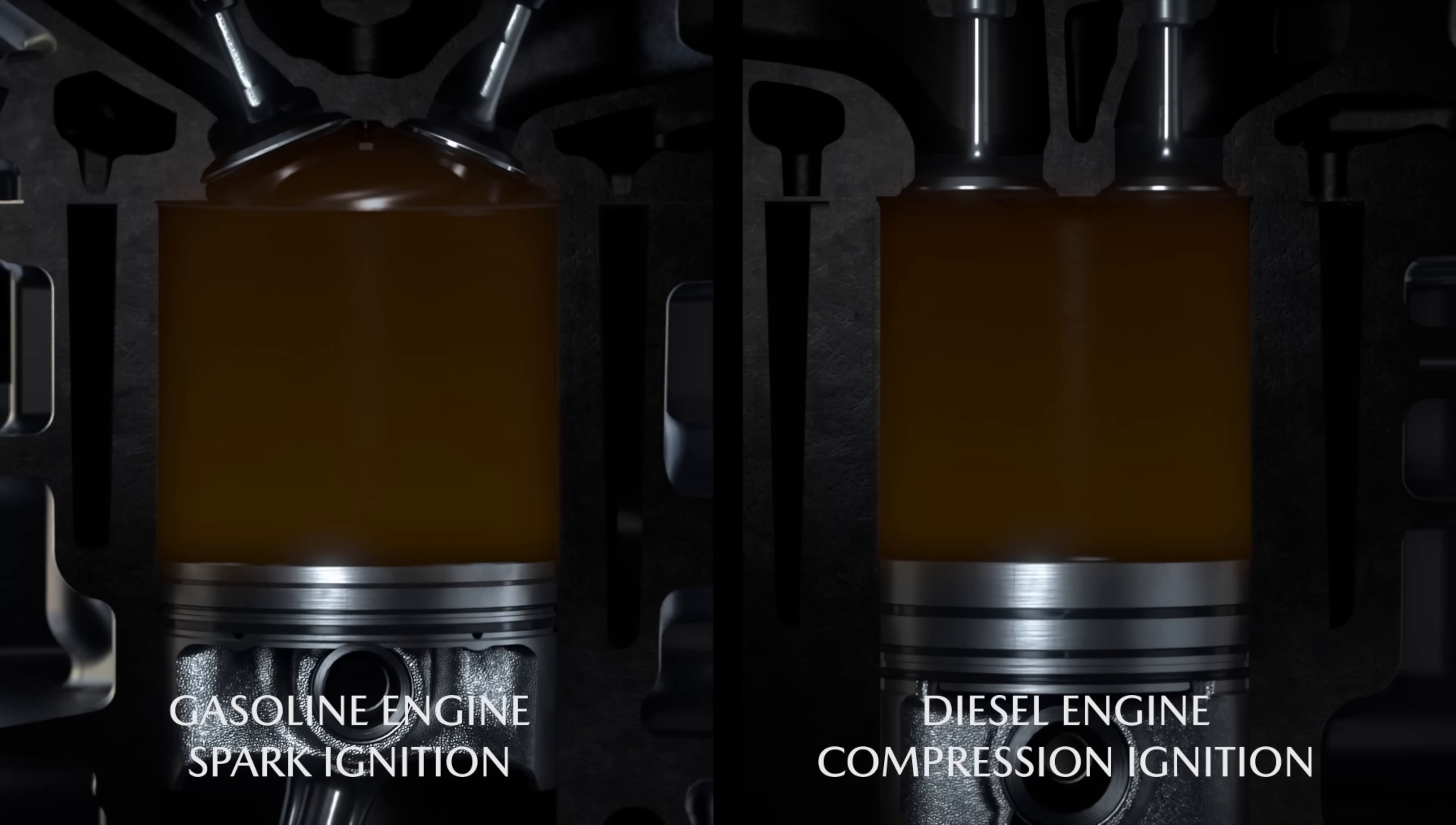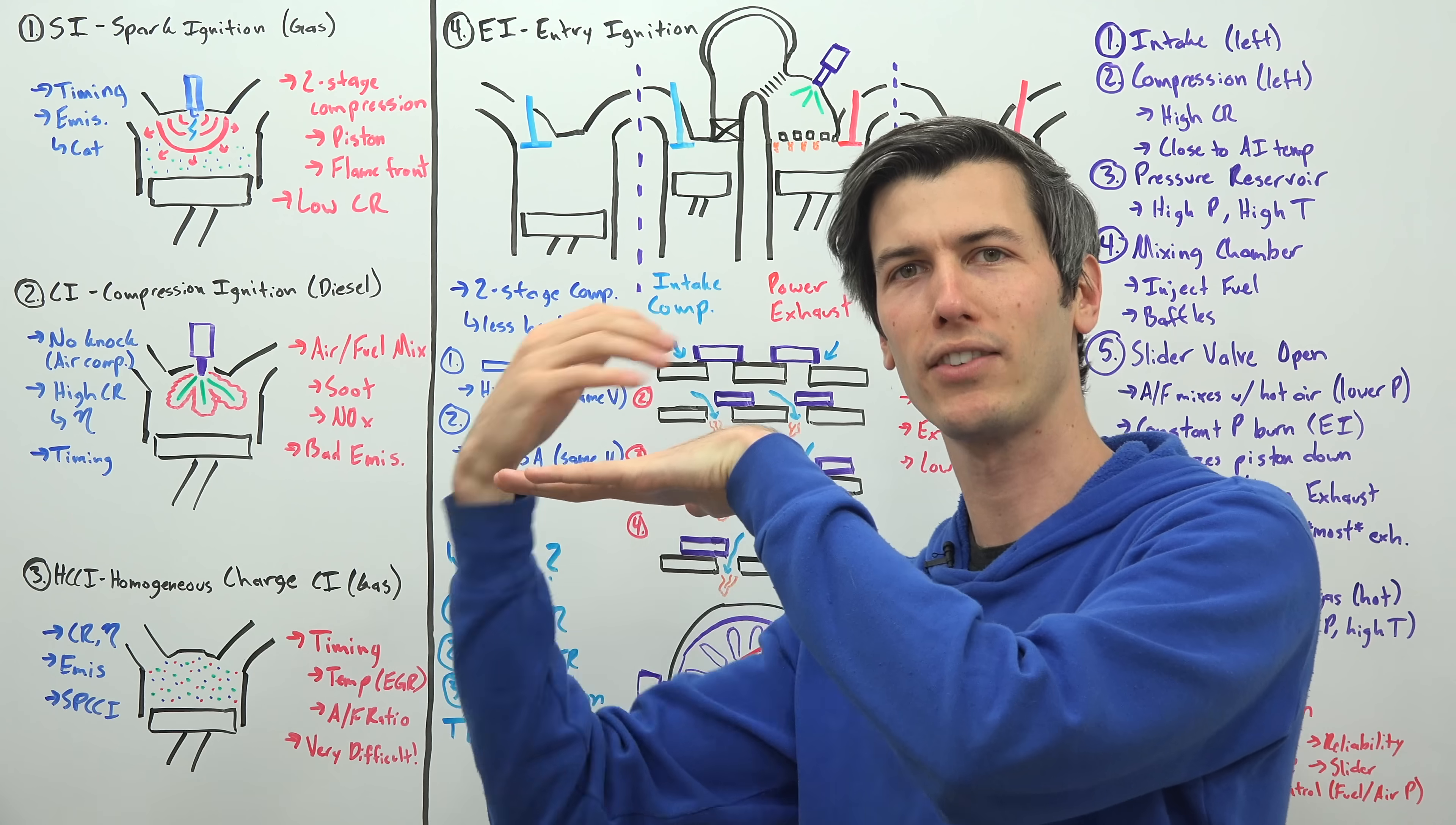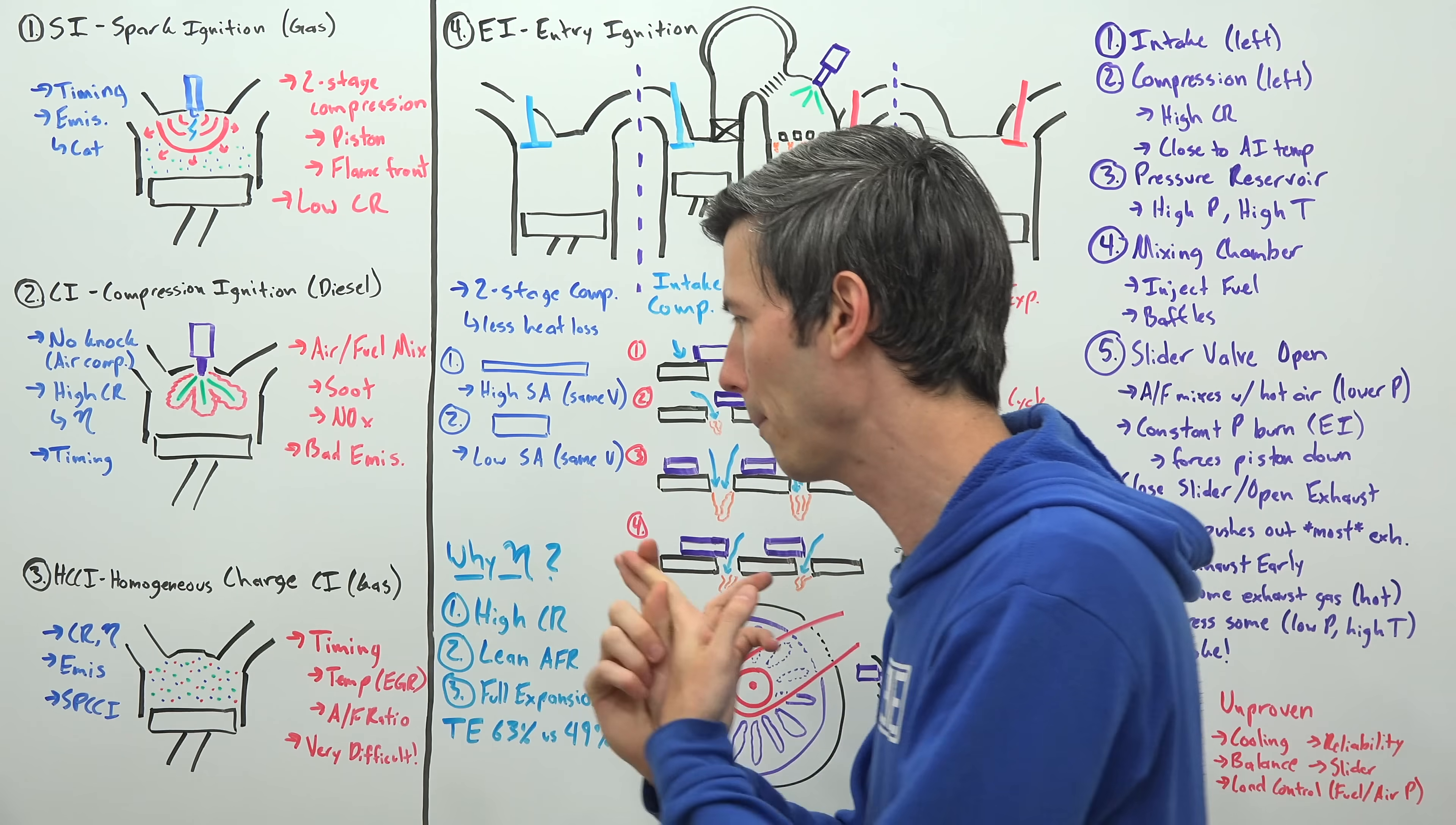So what if we combine these two technologies here, spark ignition and compression ignition? Well, we could cram them together. Basically the idea is you pull in air and fuel, you compress that air and fuel as much as is needed for it to combust, so you raise it to its auto ignition temperature, it then all combusts simultaneously, it pushes your piston down. So now we have a gasoline compression ignition engine, which has great efficiency and great emissions.